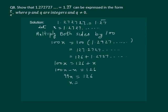So x is equal to 126 by 99. Now if we divide by 9 we will get 14 and 11, which means x is equal to 14 by 11. And it is clearly in the form p by q where q is not equal to 0. Hence we have converted a non-terminating recurring number into a rational number.